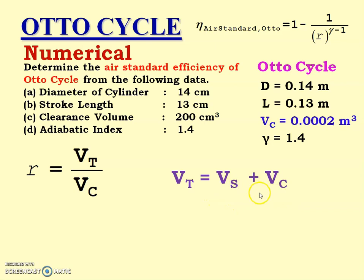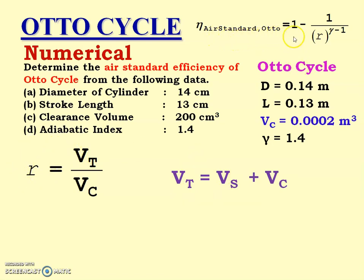Vt equals Vs plus Vc — that is swept volume plus clearance volume. Clearance volume is given, but the swept volume is not given, so we have to calculate Vs, the swept volume or stroke volume. Then we can calculate Vt, then R, and then the air standard efficiency of the Otto cycle. Vs equals area multiplied by stroke length, and stroke length is given as 0.13 m.